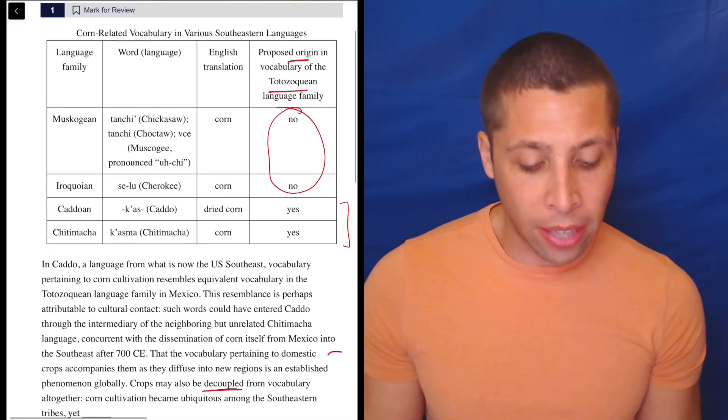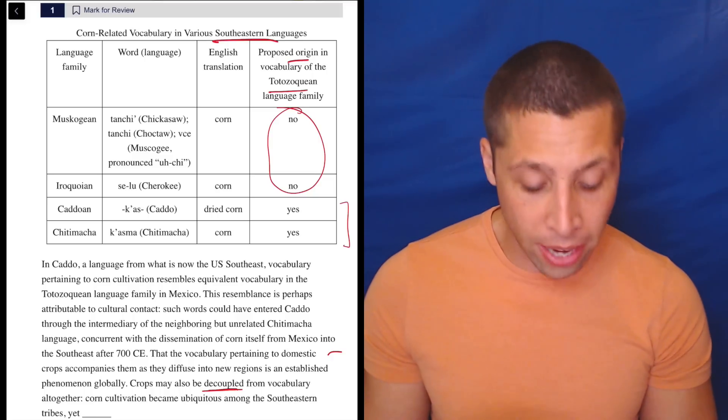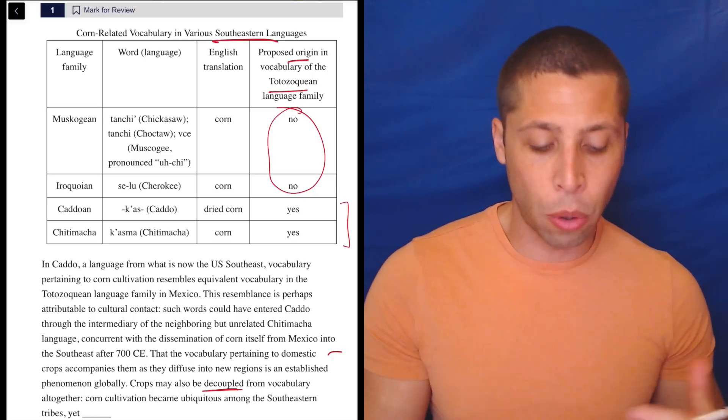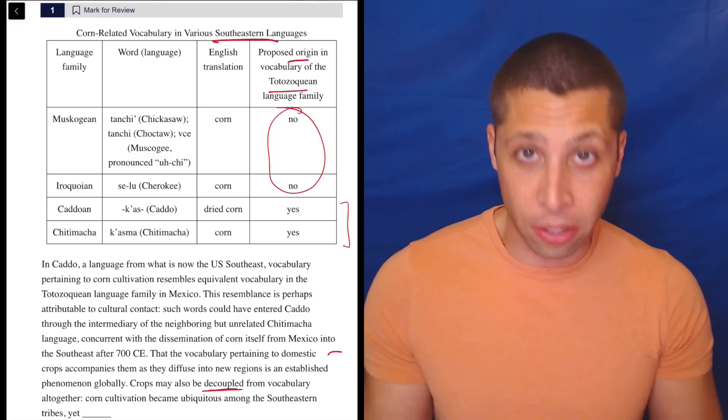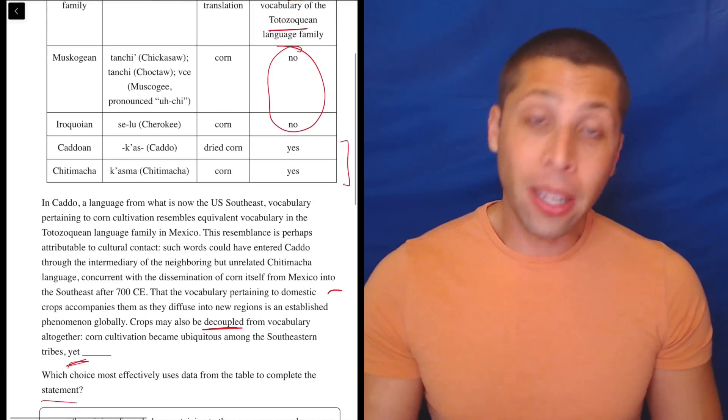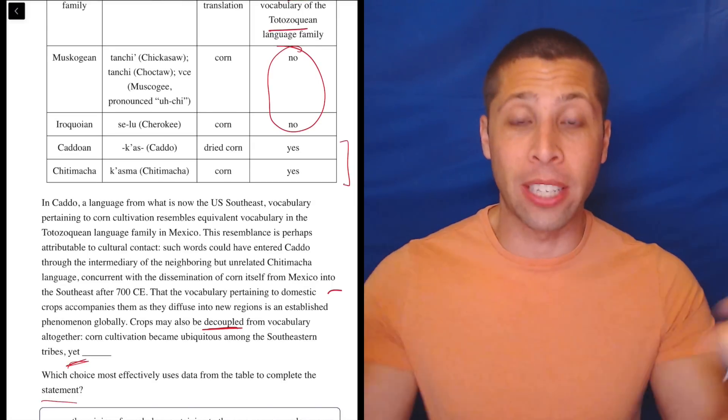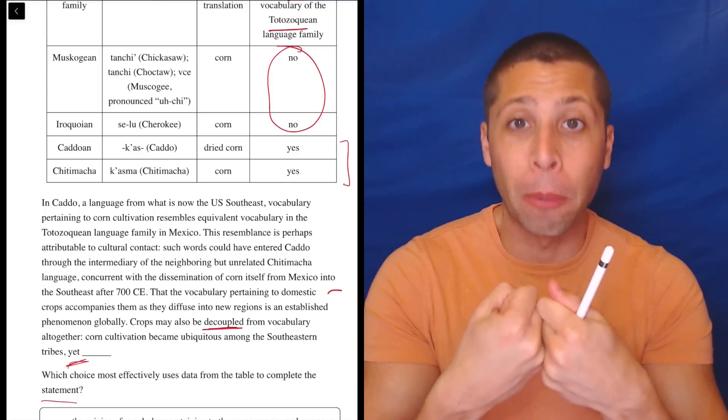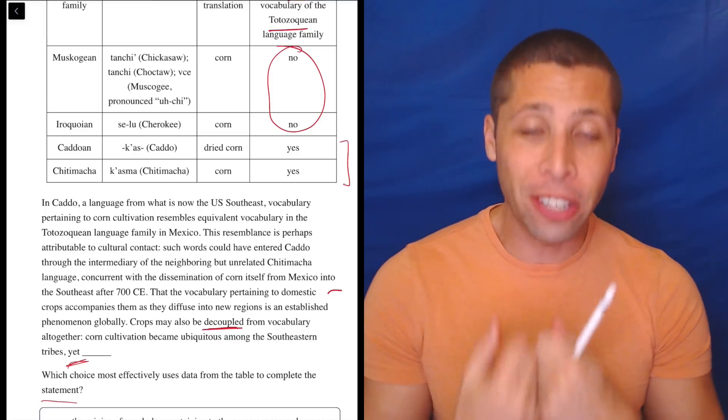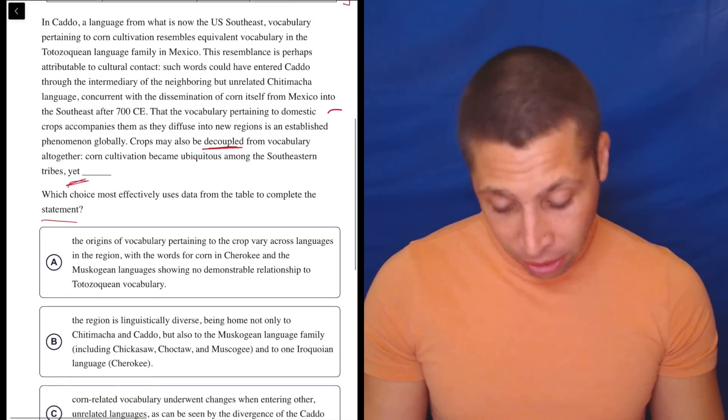Well, probably then, we're going to focus on the two no's. These are also Southeastern languages, as told to us by the title, and yet their words for corn have nothing to do with this language, or at least according to this chart, they don't. And that matches with this idea of something being decoupled. To couple something is to pair it up, so decouple means unpair it. These things are unlinked. So let's go to the choices here.